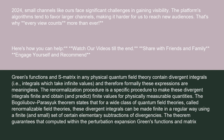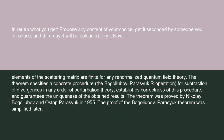The theorem guarantees that computed within the perturbation expansion, Green's functions and matrix elements of the scattering matrix are finite for any renormalized quantum field theory. The theorem specifies a concrete procedure — the Bogoliubov-Parasiuk R-operation — for subtraction of divergences in any order of perturbation theory, establishes correctness of this procedure, and guarantees the uniqueness of the obtained results.